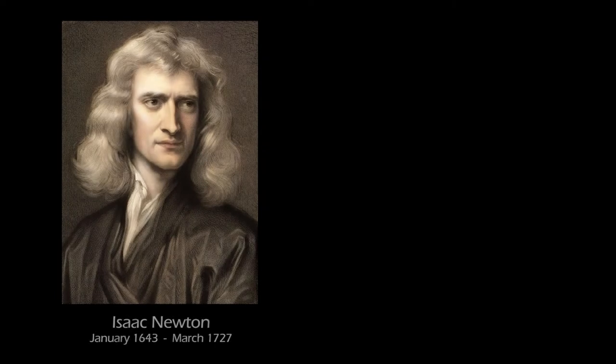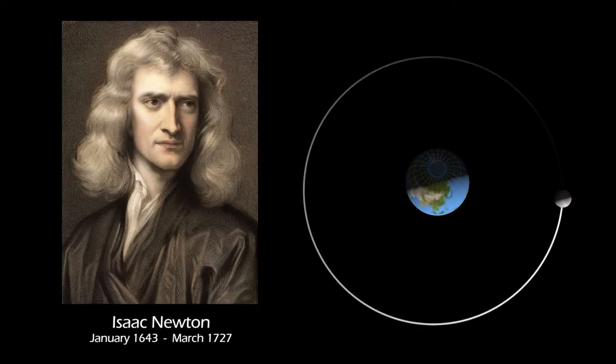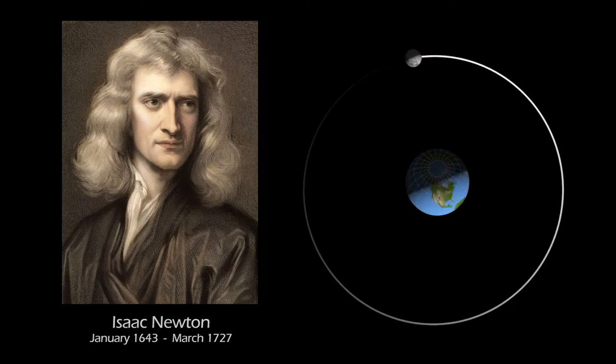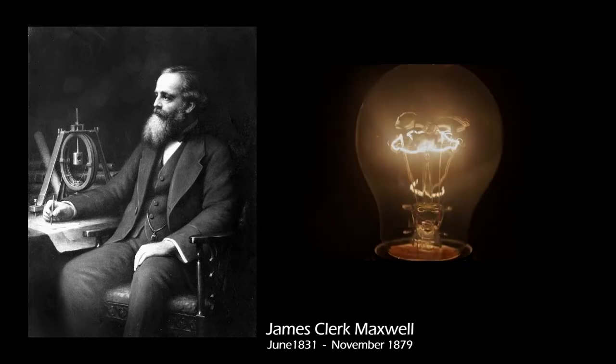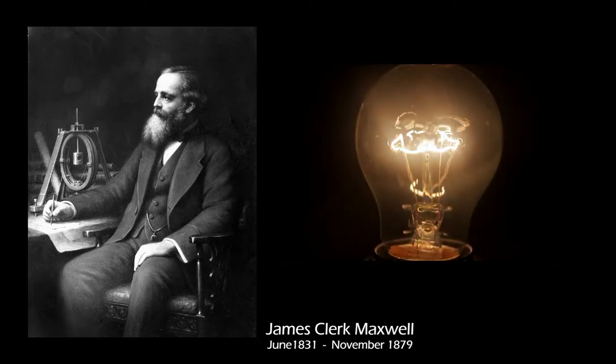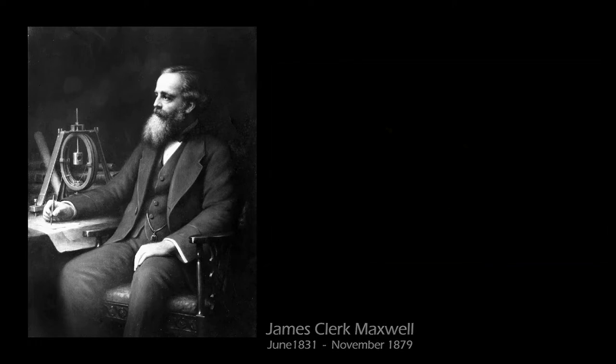For Isaac Newton, the mystery was planetary motion. Why does the moon revolve around the earth? And gravity was found to be the guilty one, the cause behind the phenomenon. For James Clerk Maxwell, the mystery was light. Why does a lamp emit light? And electromagnetism was found to be the guilty one, the cause behind the phenomenon.